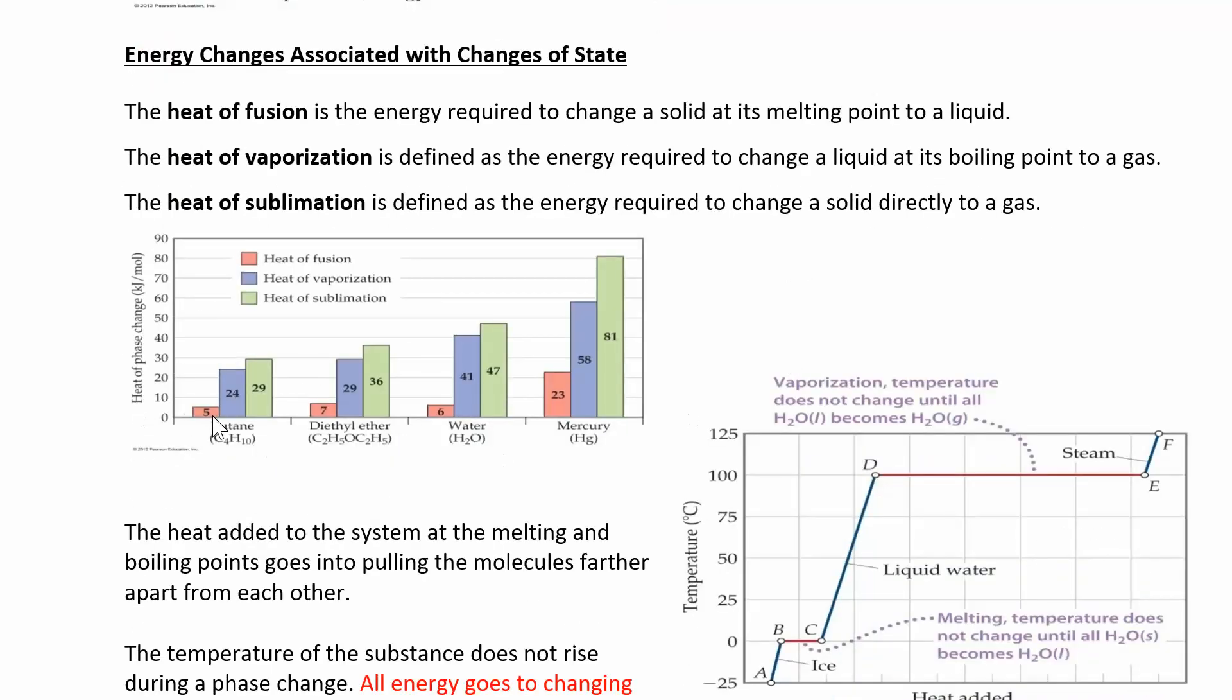These are delta H, all the different heats - heat of fusion, vaporization, sublimation - for different compounds. You can see in general, the heat of fusion is a lot smaller. The heat of sublimation is always going to be the biggest. There's going to be a big gap between fusion and vaporization.